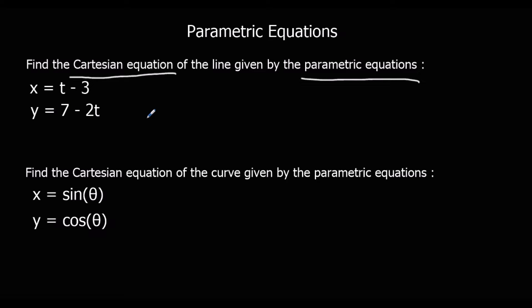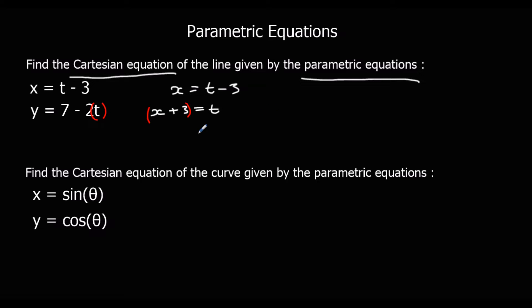To eliminate t, I'm going to make one equation equal to t. Starting with x = t − 3, if I add 3 to both sides I get x + 3 = t. So t = x + 3, and I'm going to substitute that in for t in the y equation.